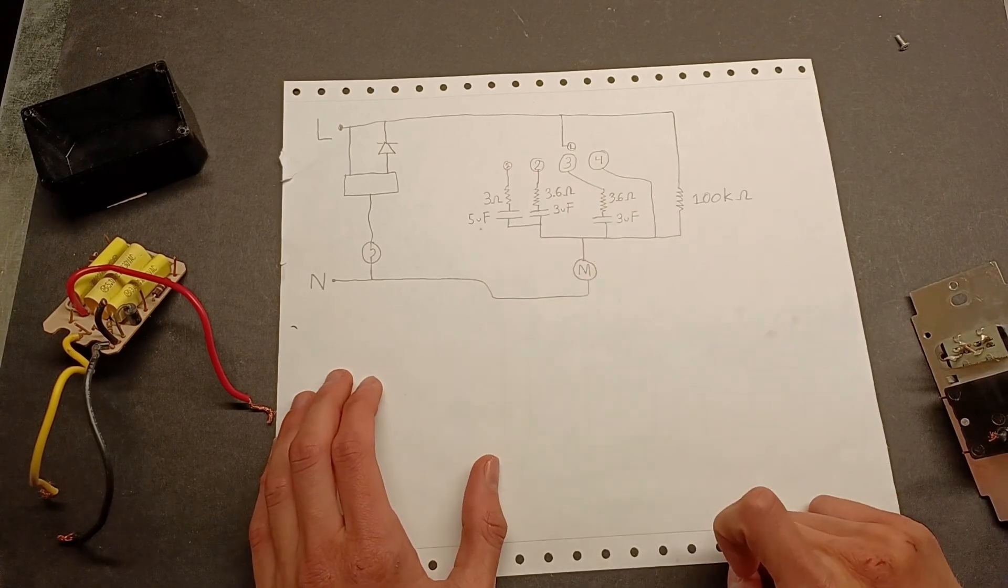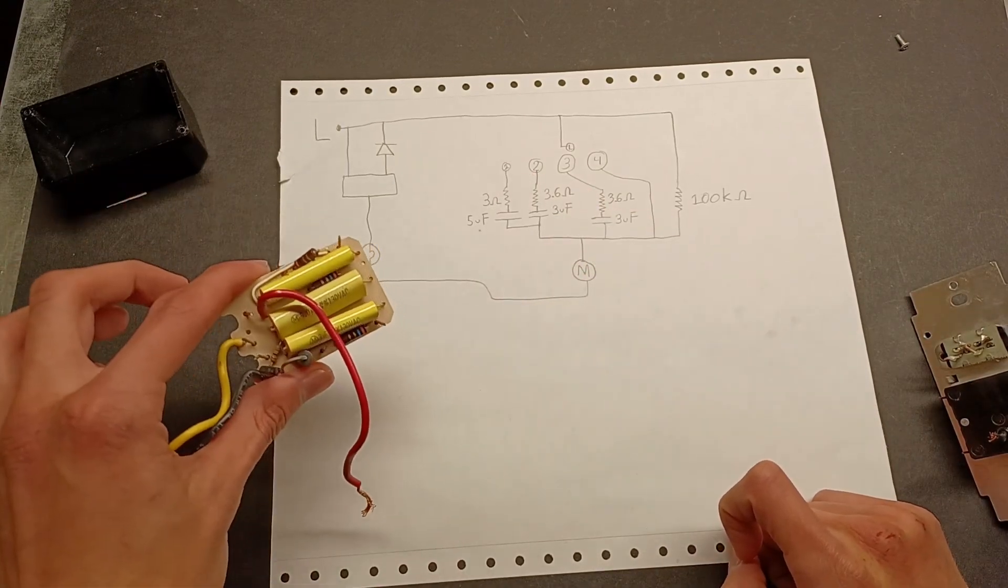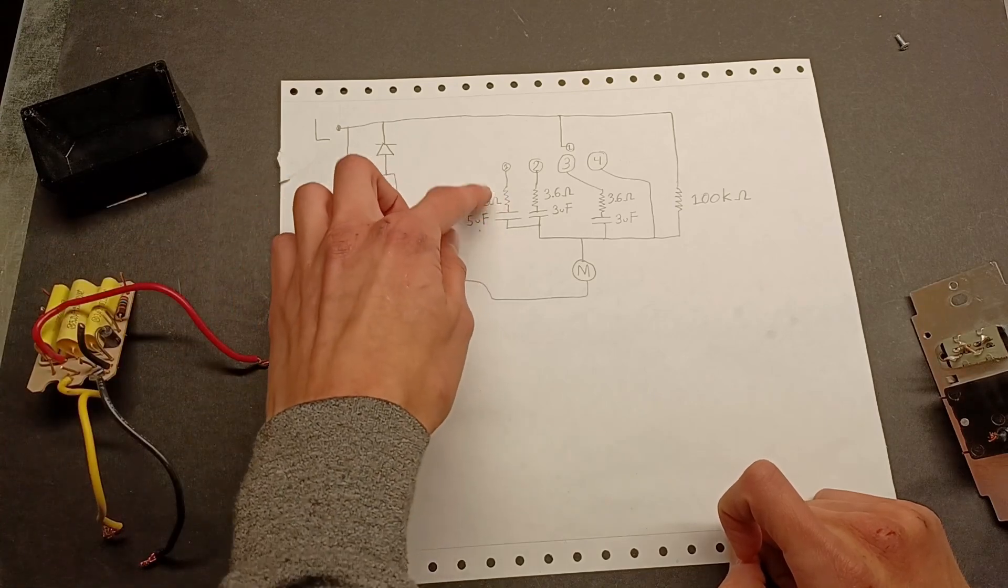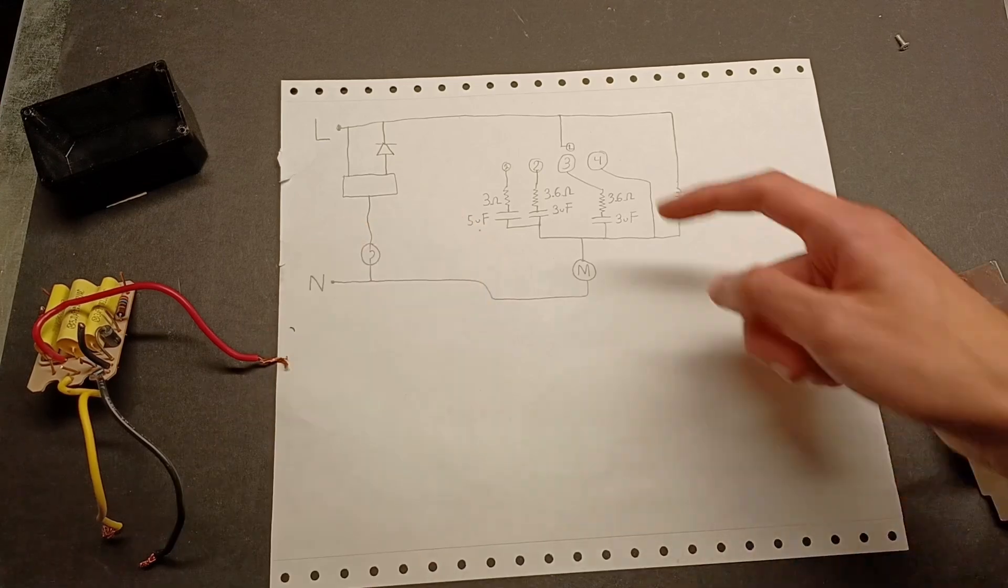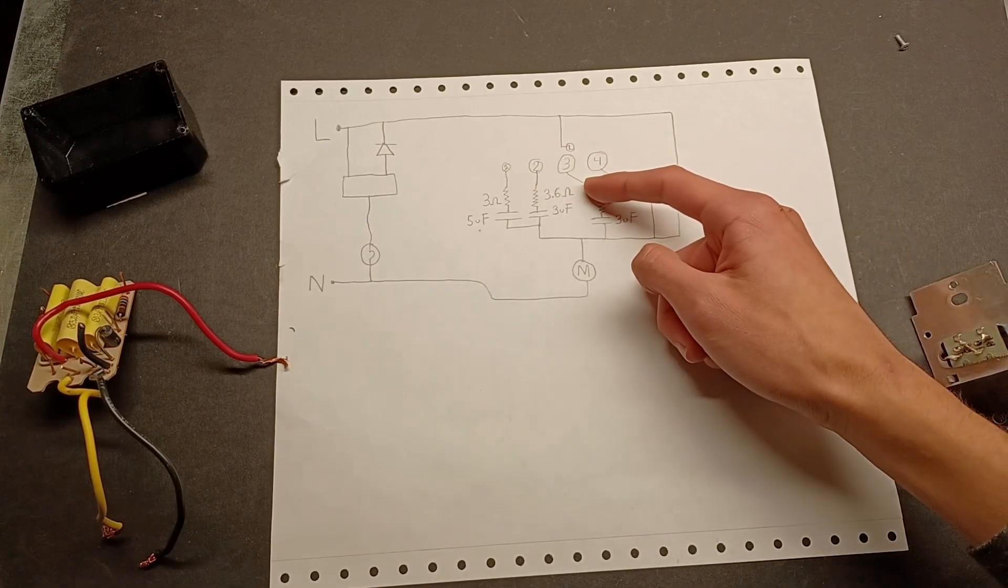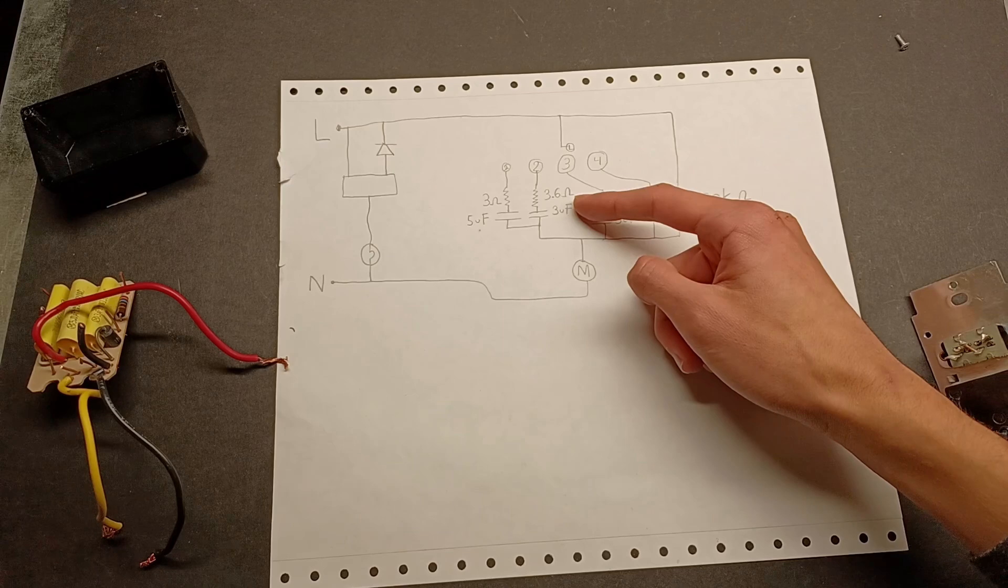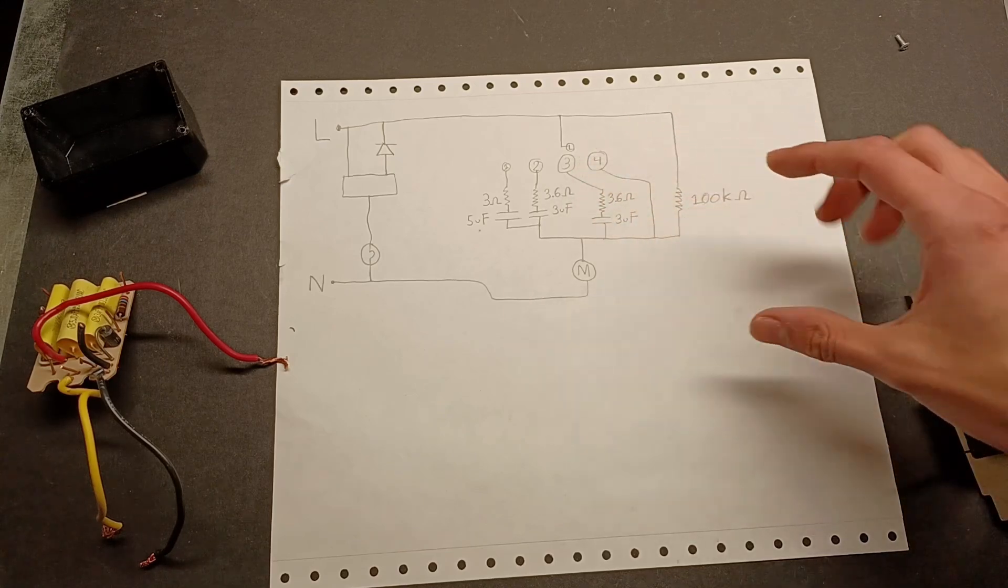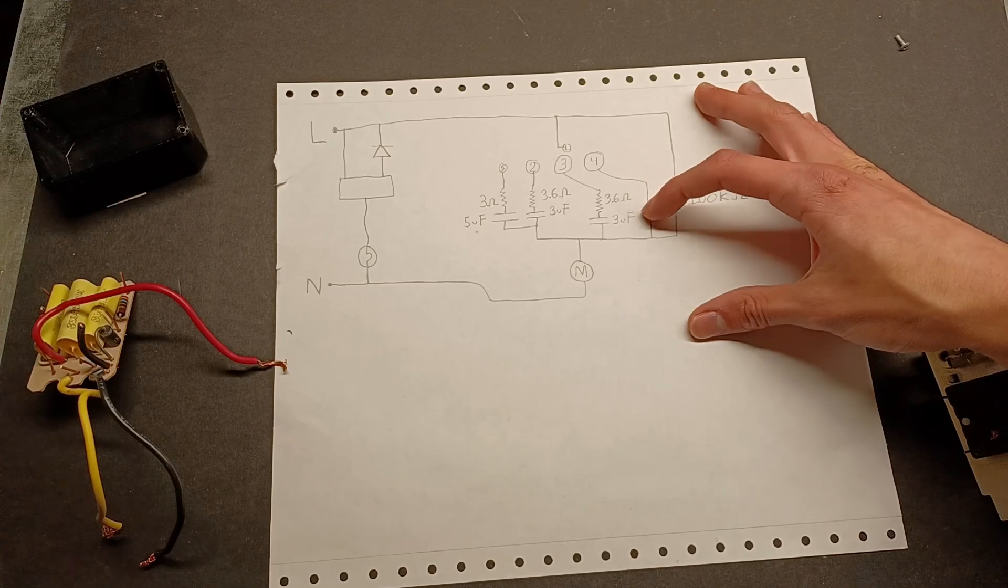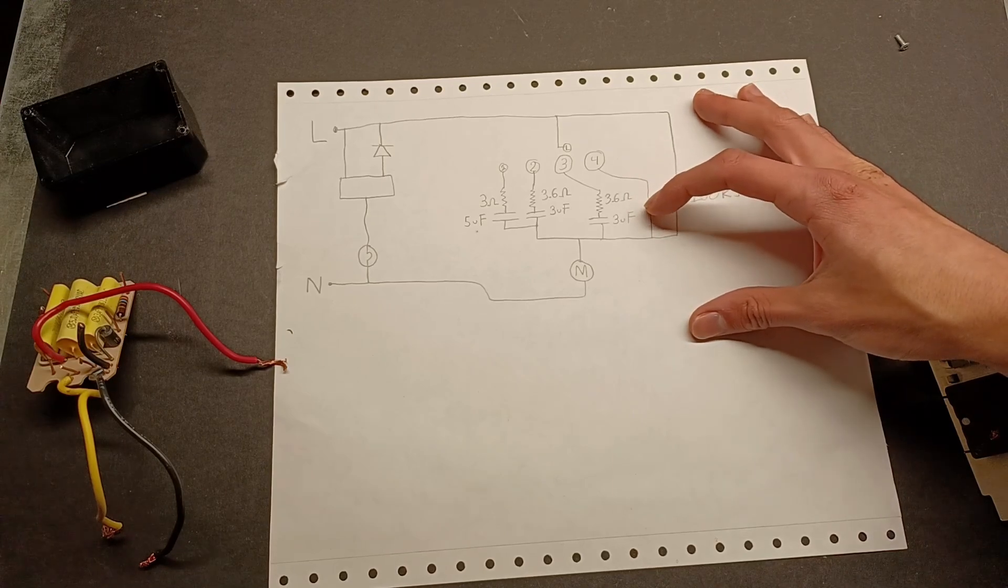Terminal 1 is connected in series with one of the resistors on here, a 3 ohm resistor, and a 5 microfarad capacitor. Terminal 2 is connected with a 3.6 ohm resistor in series with a 3 microfarad capacitor. Terminal 3 is then connected to a 3.6 ohm resistor in series with a 3 microfarad capacitor.